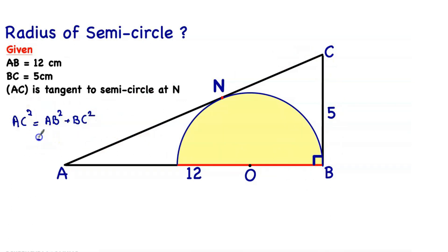So AB squared is 12 squared plus BC squared, 5 squared, equals 144 plus 25, equals 169. So AC equals the square root of 169, which is 13 centimeters. We take the positive value because we're dealing with length.